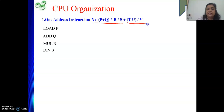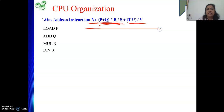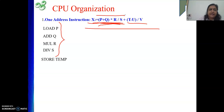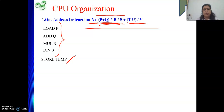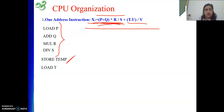But now we need to compute the second part of the expression, so we must store this intermediate result safely. We write STORE TEMP — whatever was computed is now stored in memory location TEMP. After this, we perform T minus U. So we load T into the accumulator: LOAD T, then SUB U.